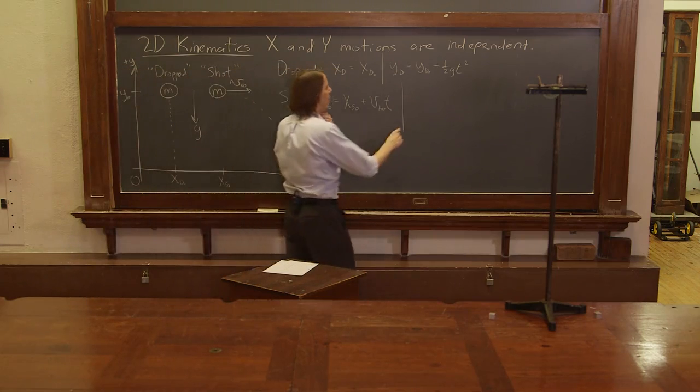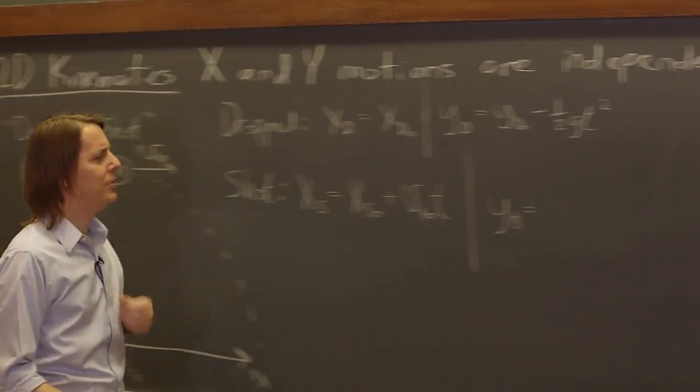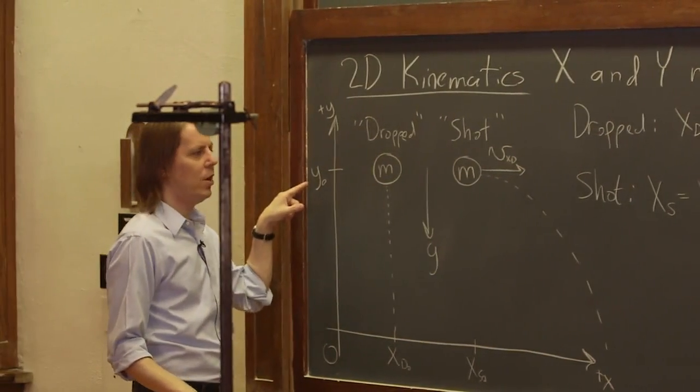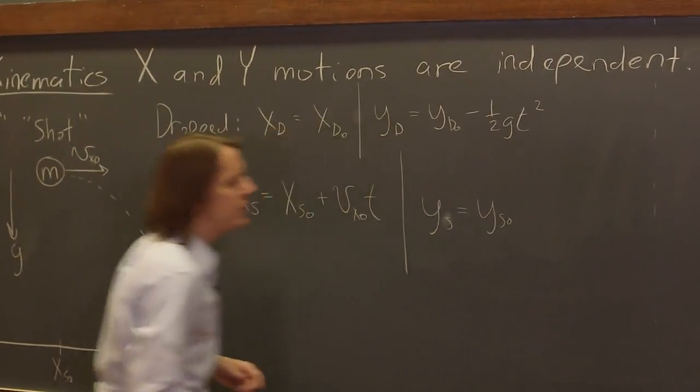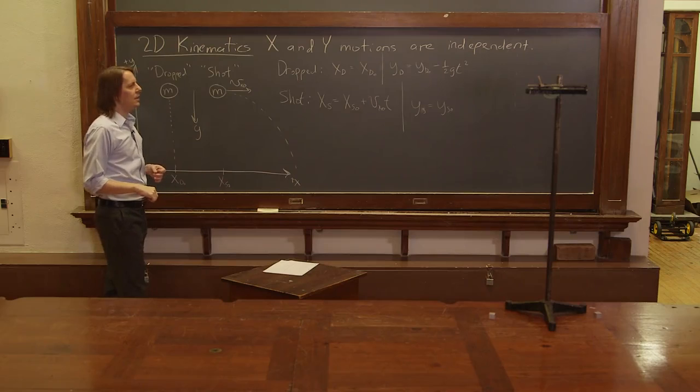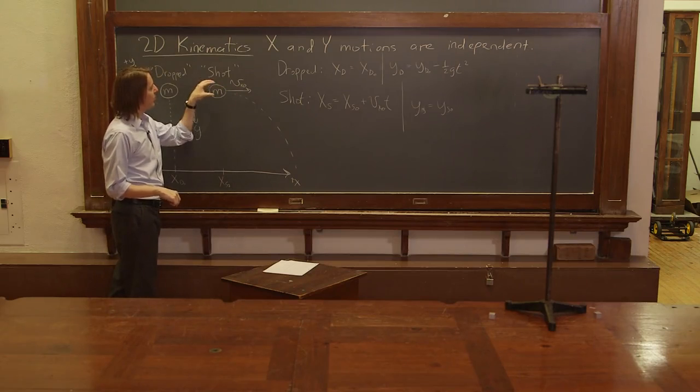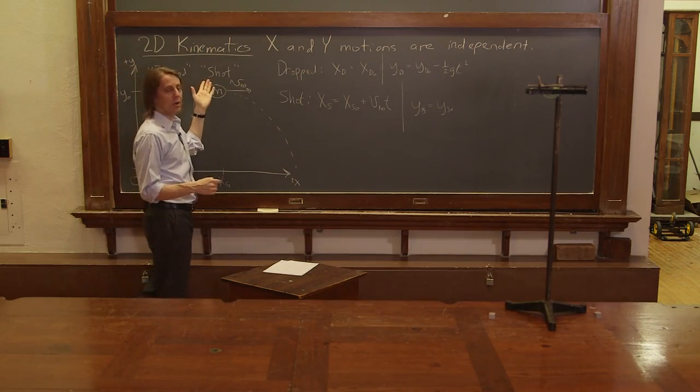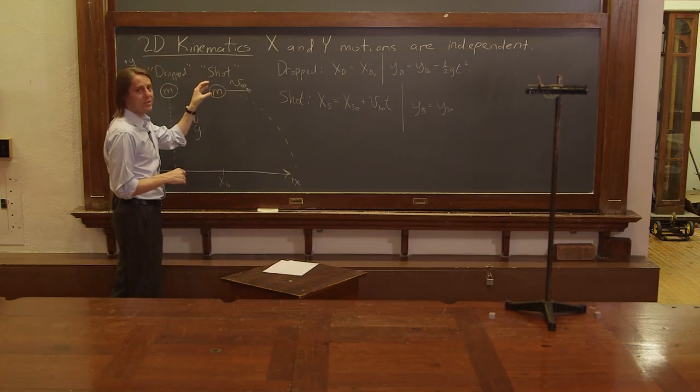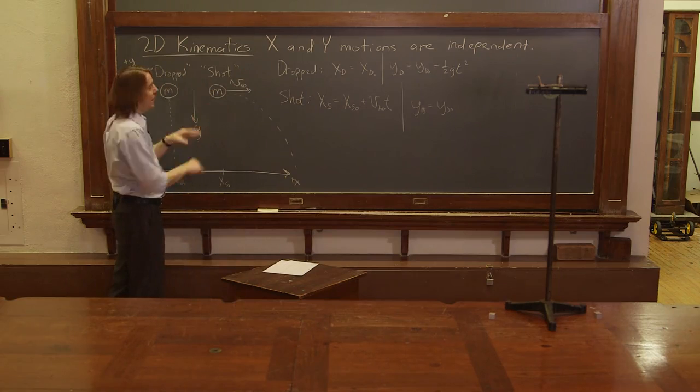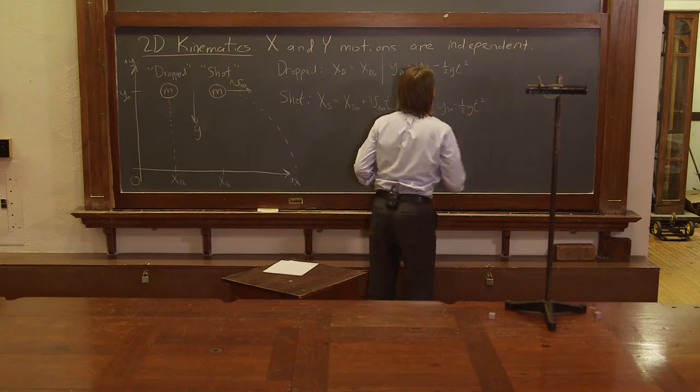Let's do Y for shot. The Y position for shot, it does have an initial value. We'll call it Y S-naught, just to be consistent. Does it have an initial velocity? And the answer is no. The initial velocity was just in X. If it shot this way from a resting position in Y, then there is no initial Y-velocity. None of these had an initial Y-velocity. Does it have a Y-acceleration? One half A T squared. Yes. Everything is falling due to gravity. So it's minus one half G T squared.